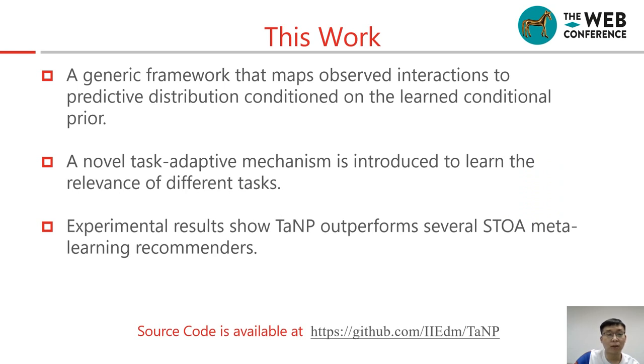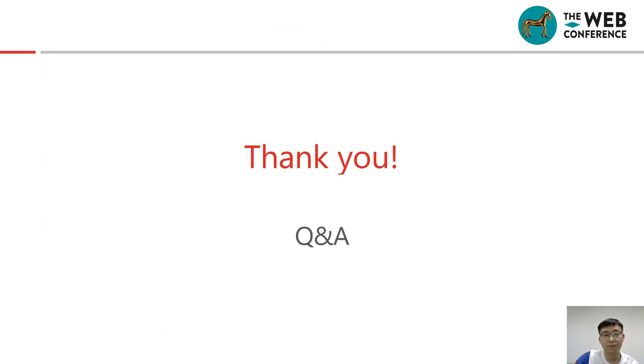This is our conclusion. Our model is a generic framework that maps observed interactions to predictive distributions conducted on the learned stochastic process. A novel task-adaptive mechanism is introduced to learn the relevance of different tasks. Experimental results show our model outperforms several state-of-the-art meta-learning recommenders. Our source code is also available at GitHub. Thank you.